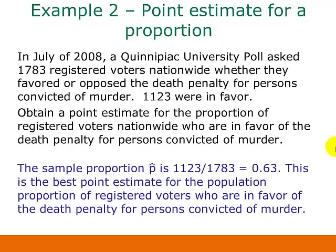Here's another example. In July of 2008, a Quinnipiac University poll asked 1,783 registered voters nationwide whether they favored or opposed the death penalty for persons convicted of murder. 1,123 were in favor. Obtain a point estimate for the proportion of registered voters nationwide who were in favor. What we're asked for is a point estimate for the population proportion, so we use the sample proportion: P-hat equals 1,123 divided by 1,783, or 0.63. This is the best point estimate for the population proportion, based on the sample data we have.